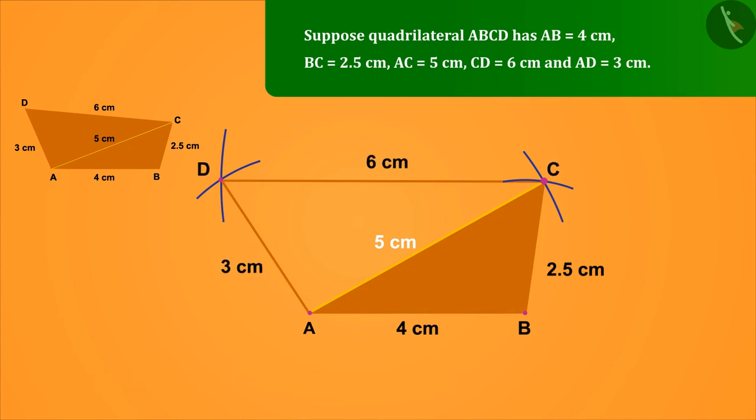Thus, we get triangle ADC, with which the construction of quadrilateral ABCD is complete. As you can see, ABCD is a desired quadrilateral.